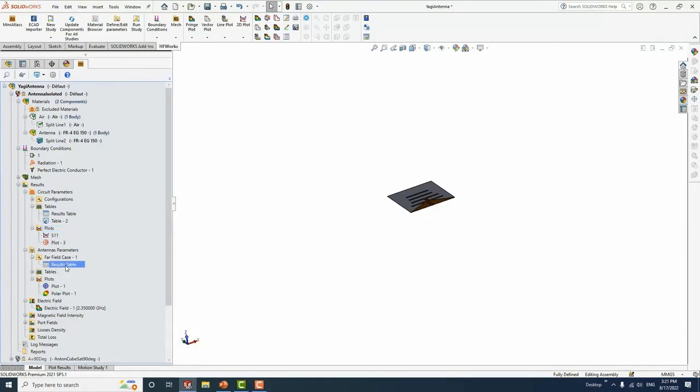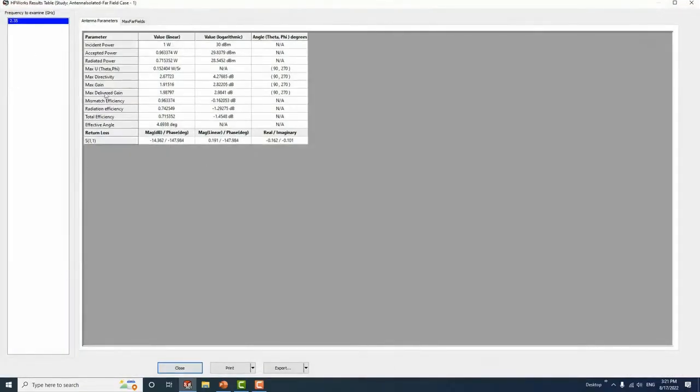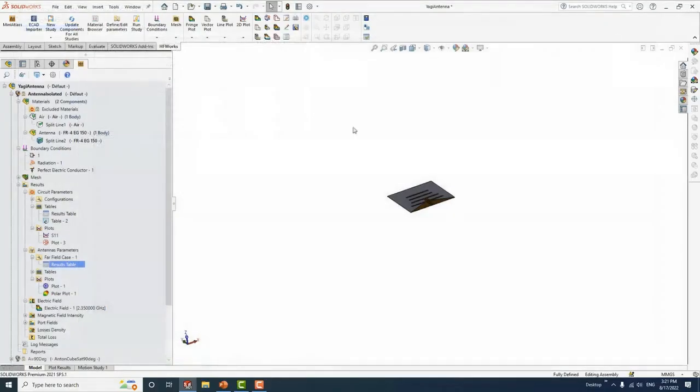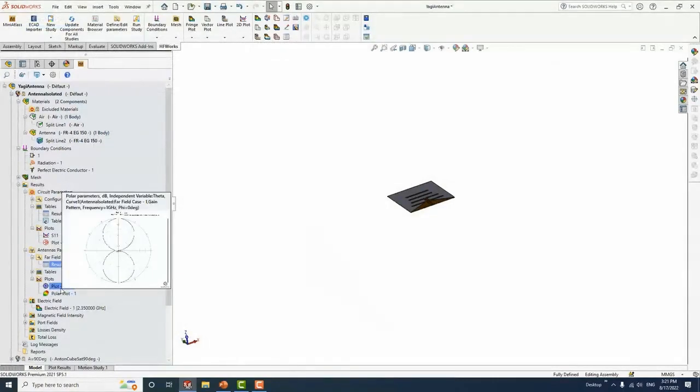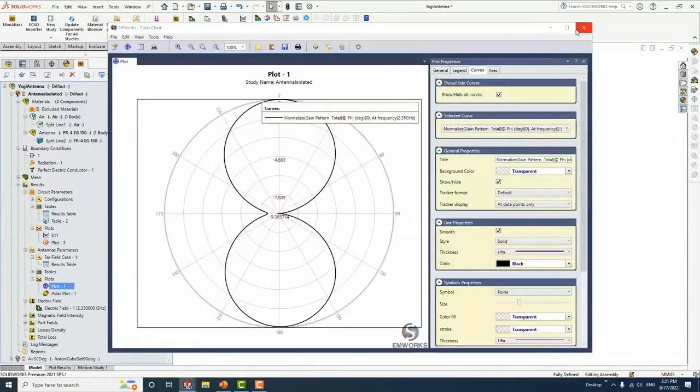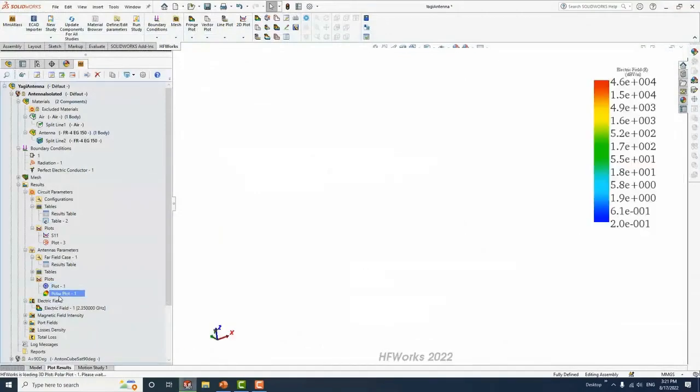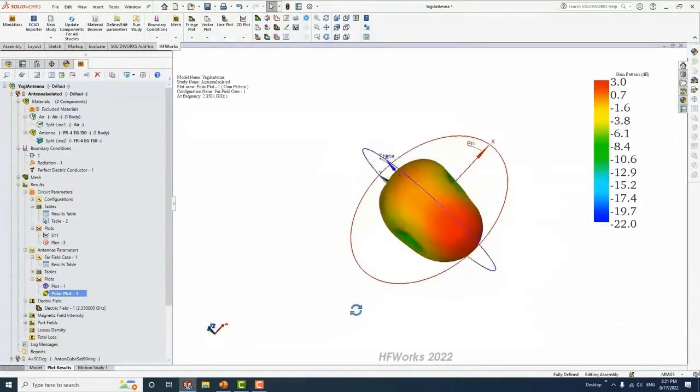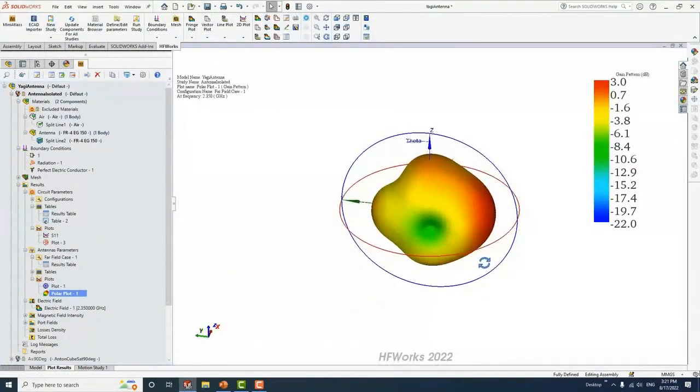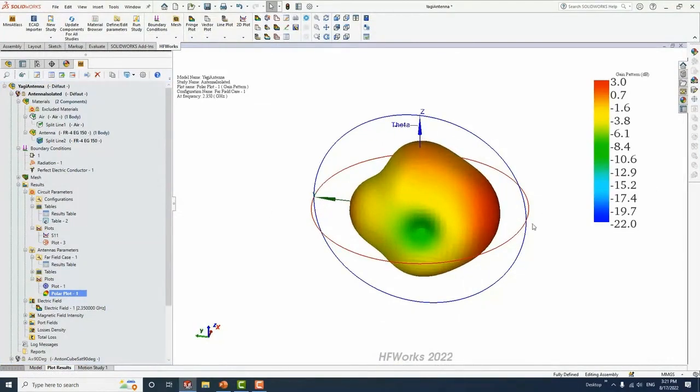In HFWorks also we have what we call the far-field results table. In this table we can see different parameters such as directivity, gain, radiation efficiency, and total efficiency. You can also export results. This is the 2D gain pattern of the antenna. And this is the 3D gain pattern. The antenna has a maximum gain of 3 dB along the Y-axis.